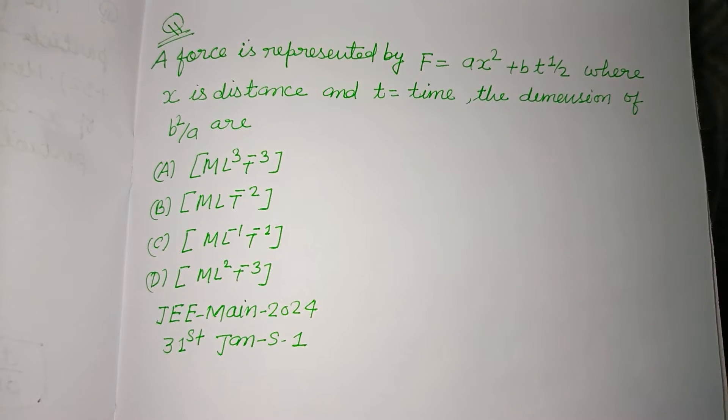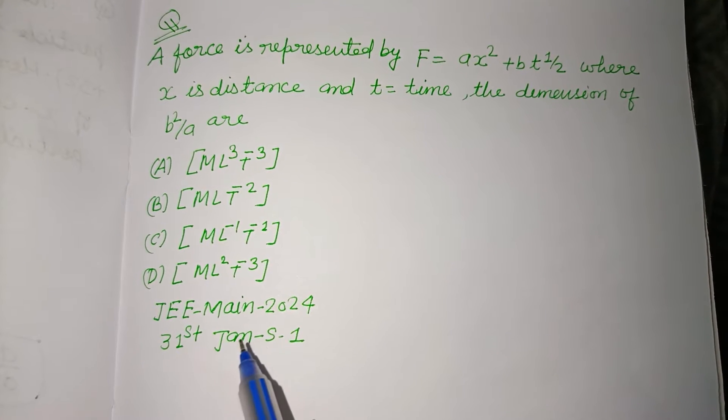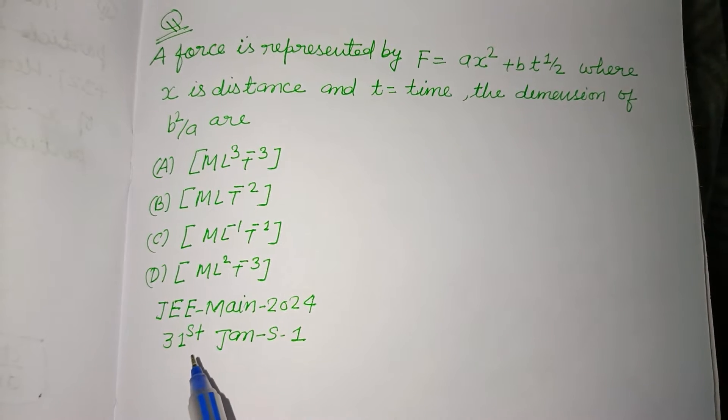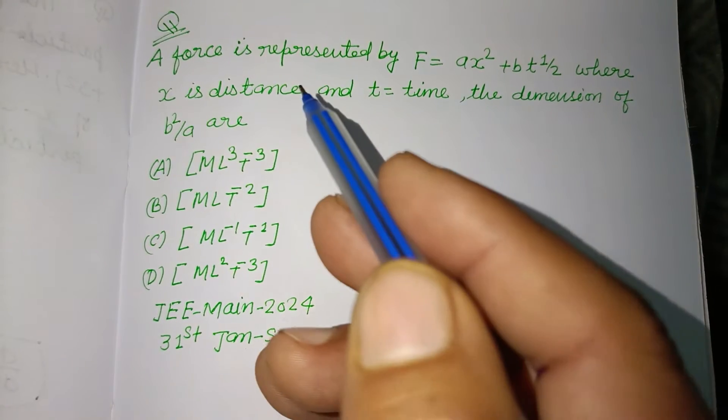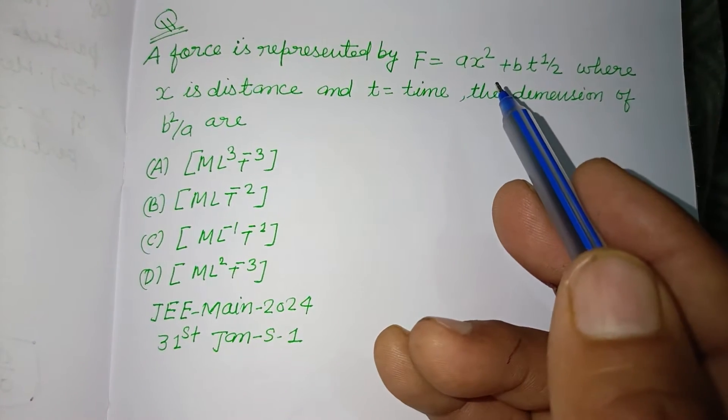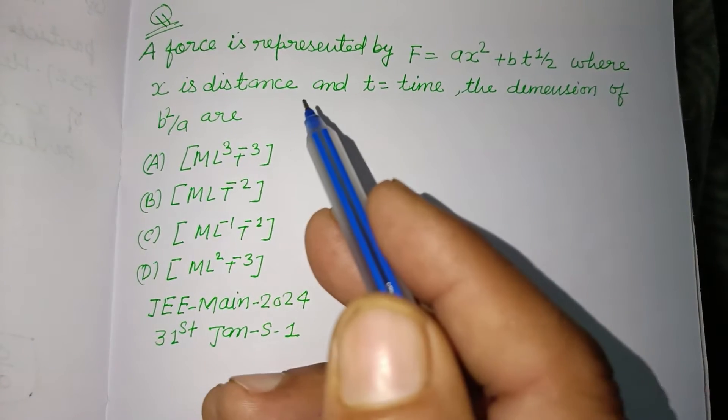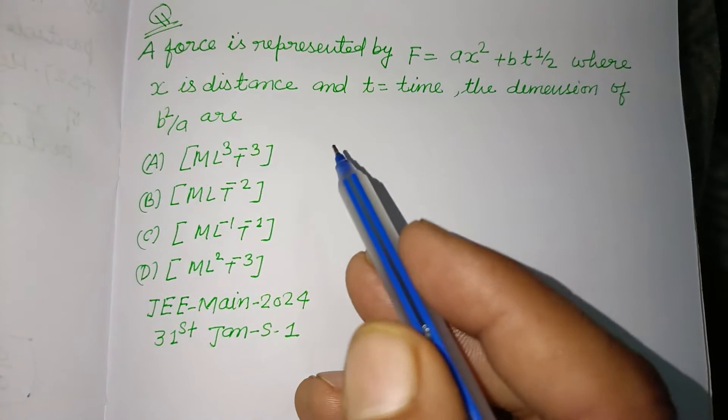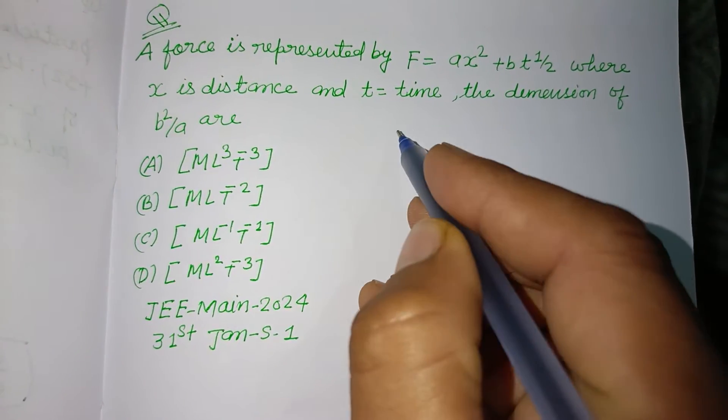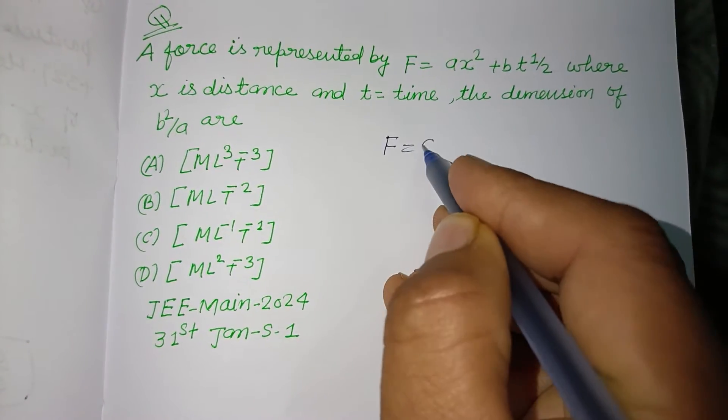Hello viewers, warm welcome to this YouTube channel. This is a question from JEE Main 2024, 31st January shift 1. A force is represented by F = ax² + bt^(1/2), where x is distance and t is time. The dimension of b² over a is...